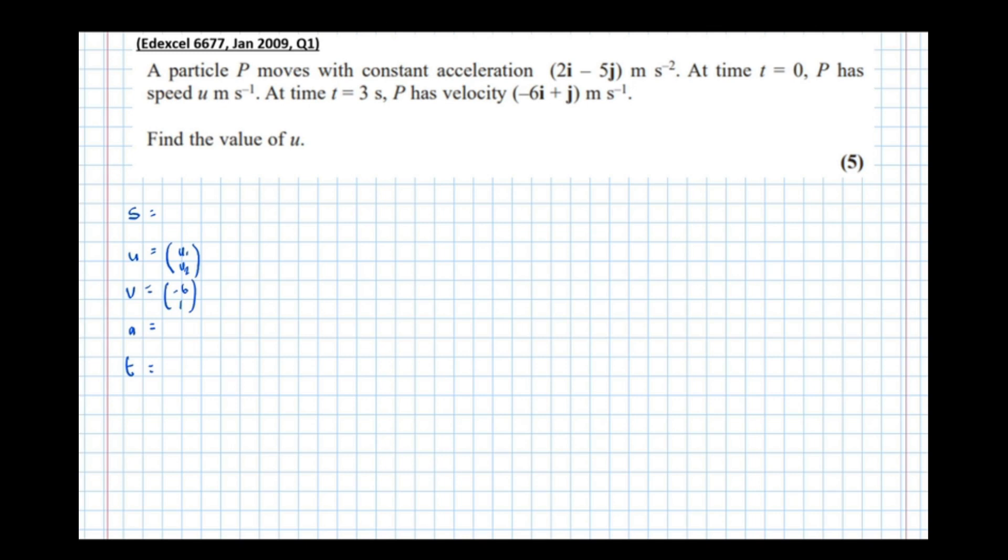Acceleration is (2, -5) and the time describing the scenario is t = 3, so the velocity is (-6, 1) when t = 3.